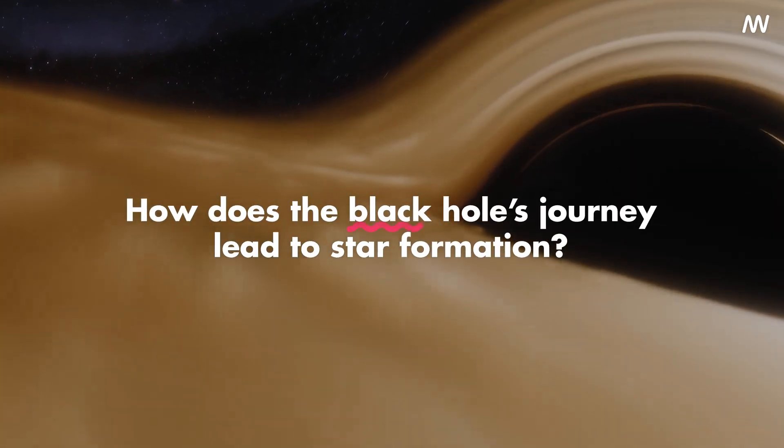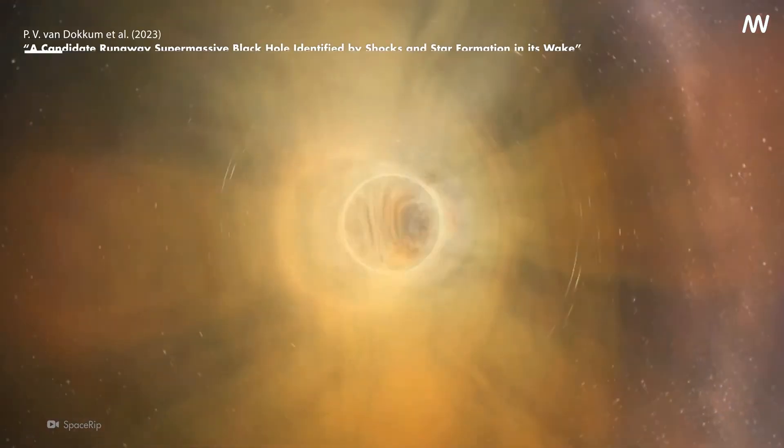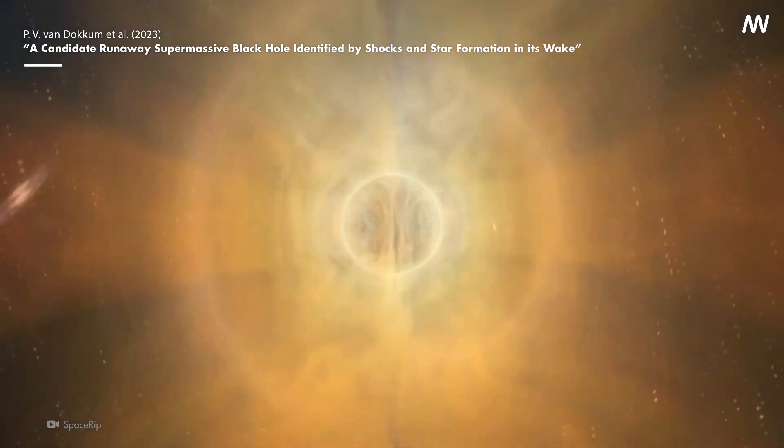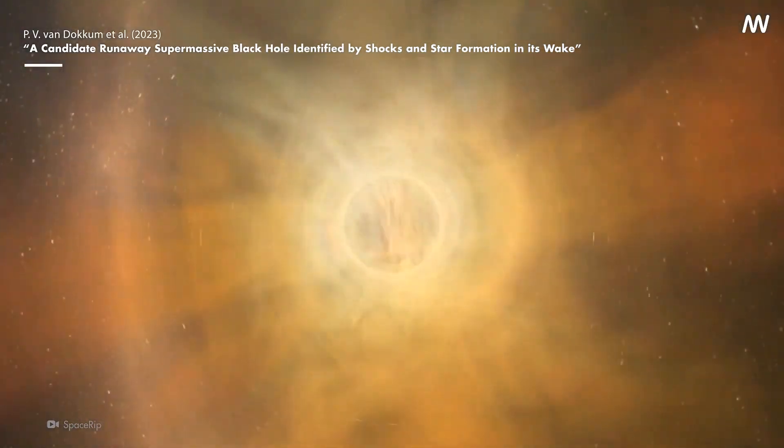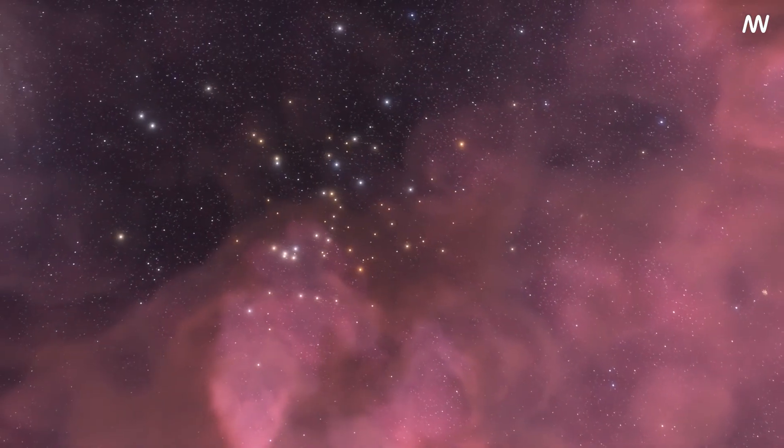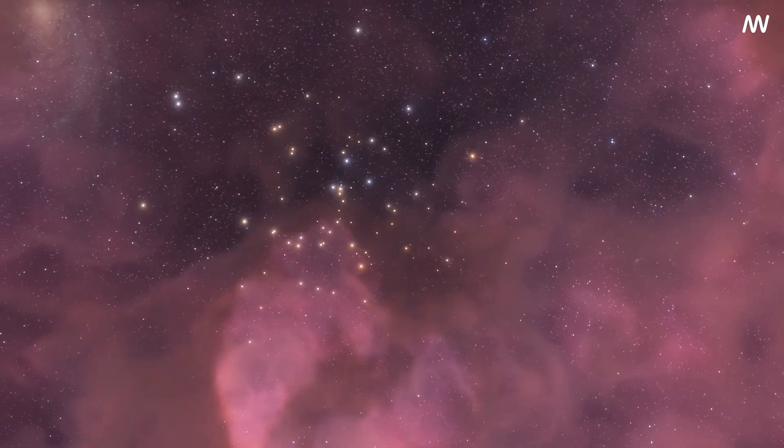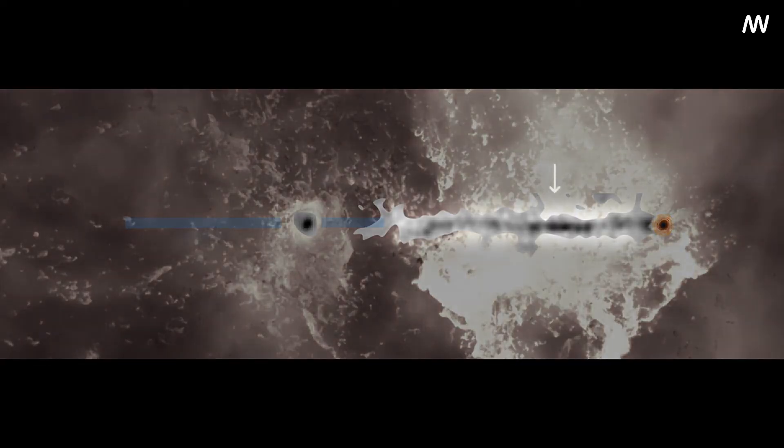But how exactly does the black hole's journey lead to star formation? The black hole's immense gravitational pull triggers shock waves in the galactic medium. These shock waves compress the gas, causing it to heat up and emit light. This illuminated, heated gas is what we're seeing as the glowing wake trailing behind the black hole.